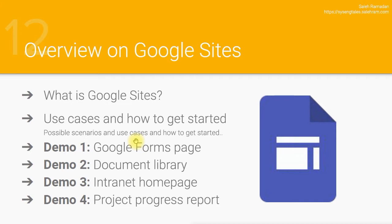Then I'll move to Google Sites and build a very basic single-page site for the form, and probably add another page for the answers — showing how to link the Google Sheet and charts into that answers page. Finally, I'll walk through the steps to publish the site to the internet and test it.